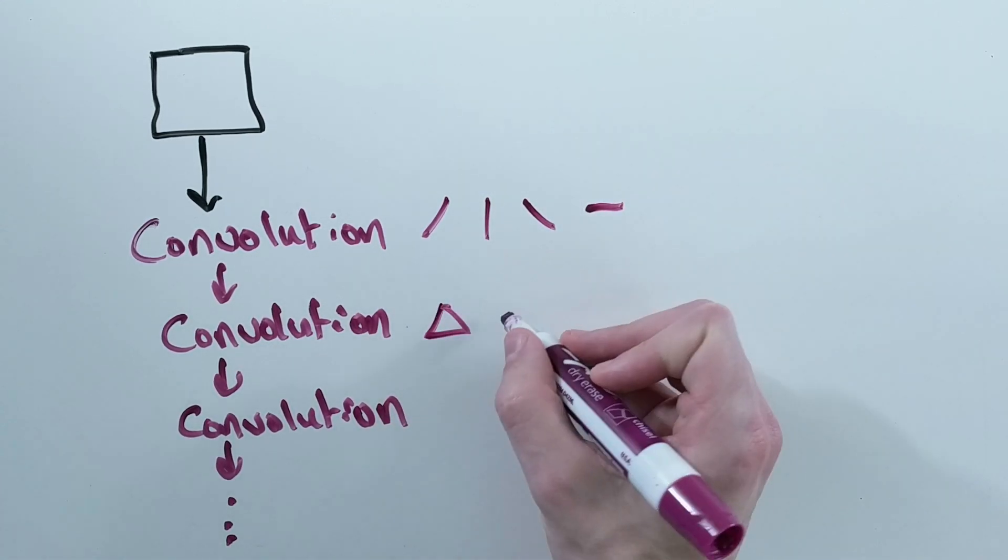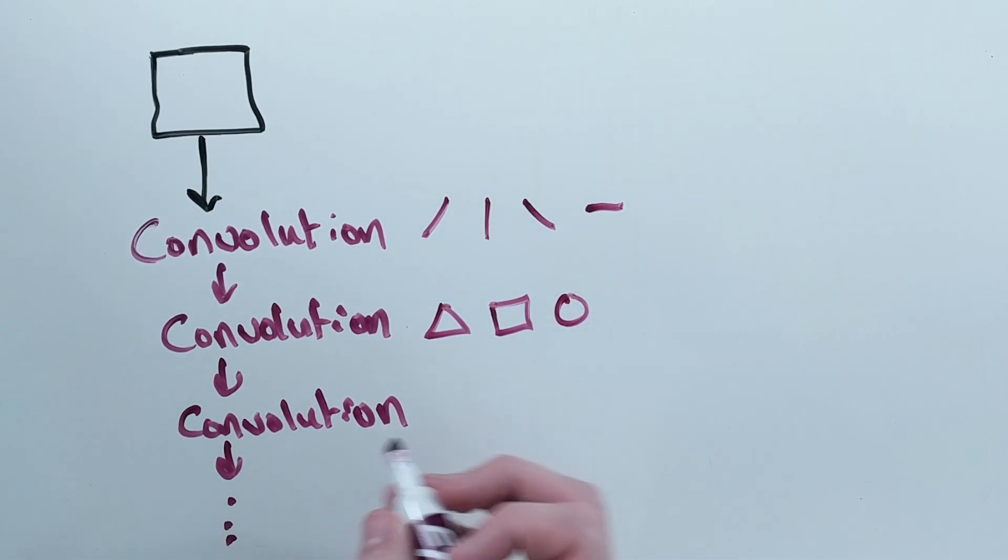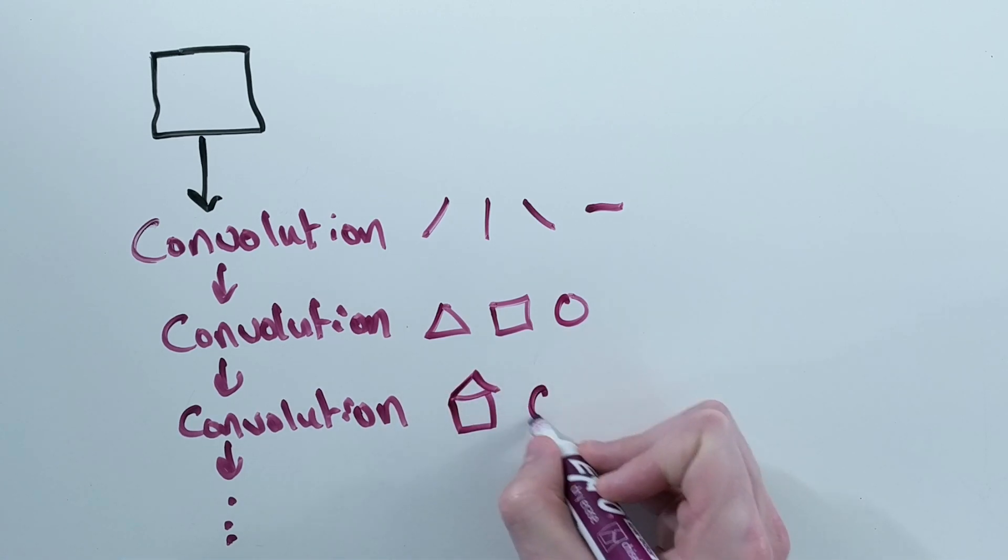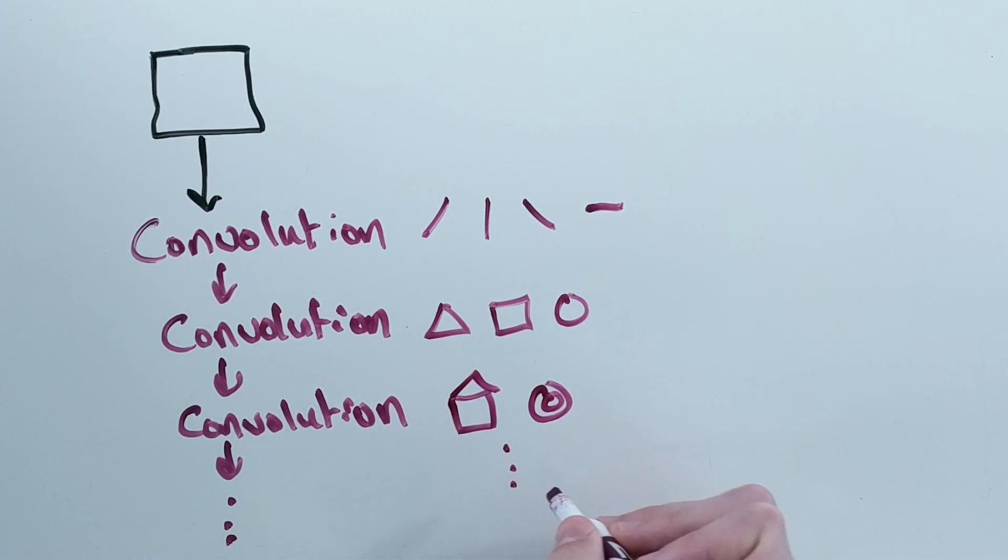For example, the first layer may detect edges, the second may combine those edges into basic shapes, the third might join those shapes together, and so on, all the way until we have complex representations for objects like faces or trees.